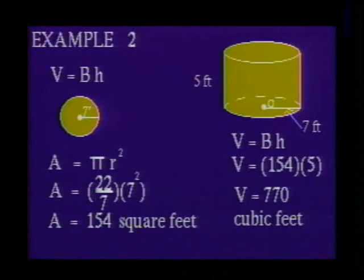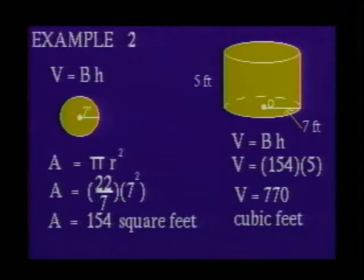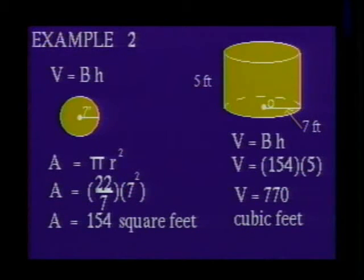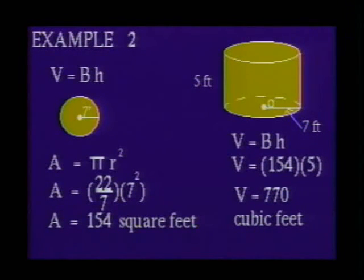Example 2: Find the volume of a circular cylinder with a radius of 7 feet and a height of 5 feet. The formula for the volume of a circular cylinder is V = B × H, where capital B is the area of the base and H is the height. The base of this cylinder is a circle, so we must calculate the area of the circle first using A = πr². Substituting 7 for r and using 22/7 for pi, we find the area of the circle is 154 square feet. Substituting 154 for B and 5 for H, we find the volume of the cylinder is 770 cubic feet.